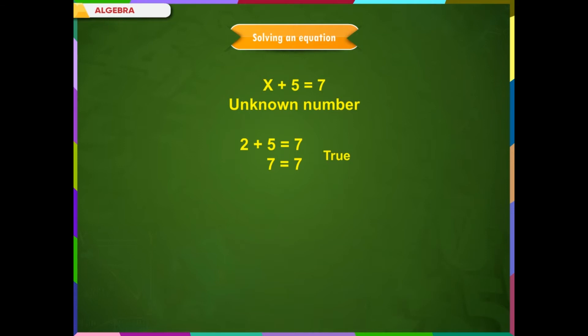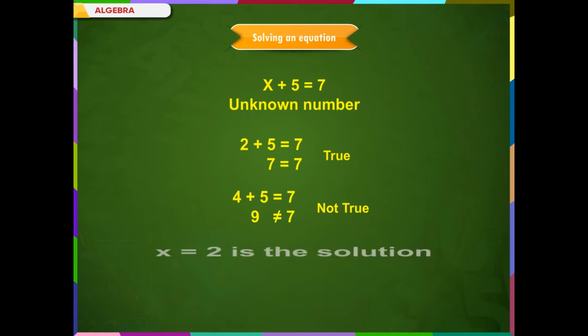For example, if we put the value 2 in place of x, we get 2 plus 5 is equal to 7, which is a true statement. On the other hand, if we put the value 4 in place of x, we get 4 plus 5 equals 9, which is not equal to 7 — not a true statement. This means x equals 2 is the solution of the equation x plus 5 equal to 7.